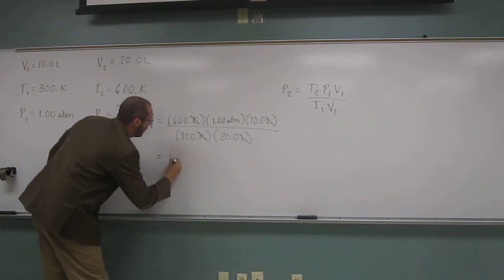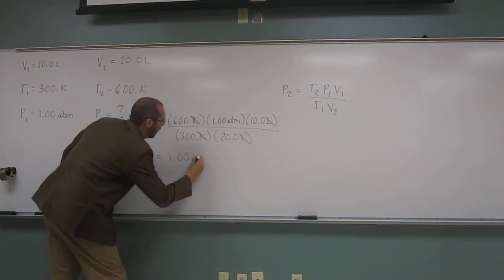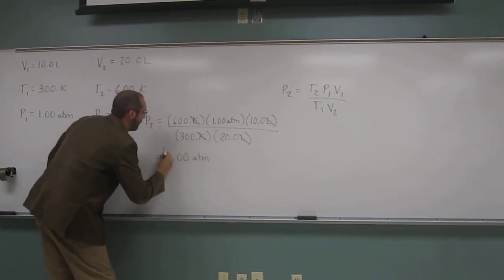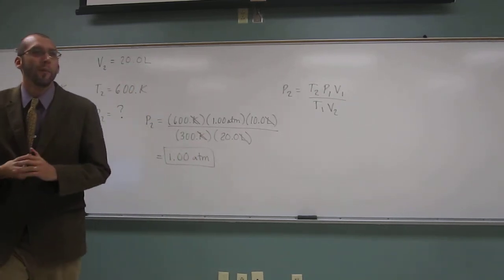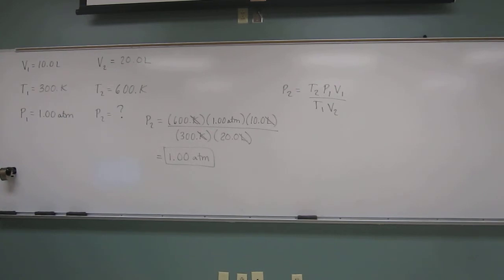What did we get? 1.00 atm. So that was kind of a tricky problem, okay? Because when we doubled both of those, they offset each other, okay? So are there any questions about this one? Okay. It is a tricky one.